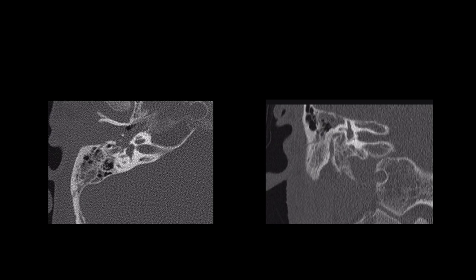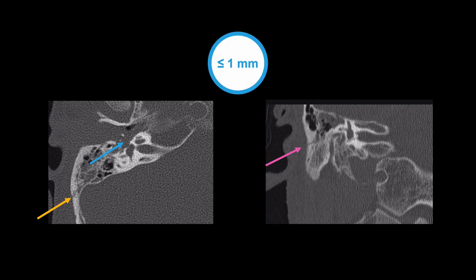In the setting of trauma, whenever you see fluid in the middle ear on CT, you should search for an associated skull base fracture on the same side. While the fracture in this case is faintly visible on the axial scan, it is much more evident on the thin reconstructions seen in the coronal plane. As with all suspected fractures, it will be more evident if you have the images reconstructed in thin sections, since volume averaging with 5 mm thick sections can obscure these fine, non-displaced fractures.